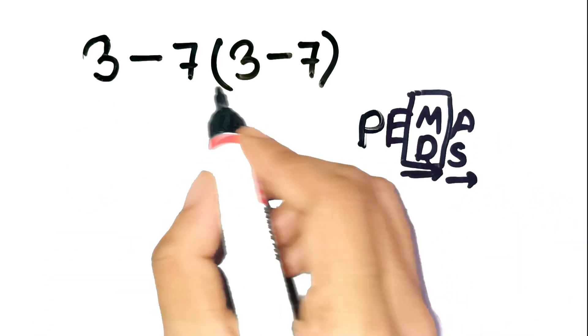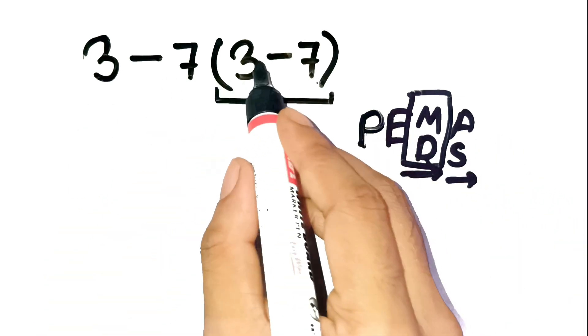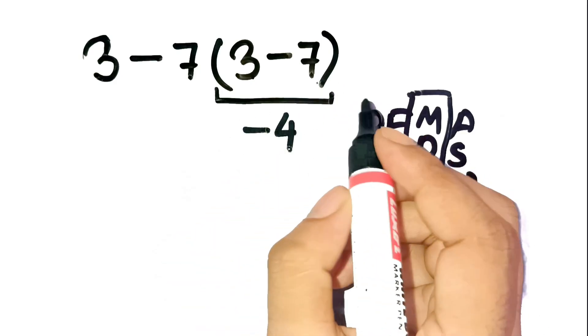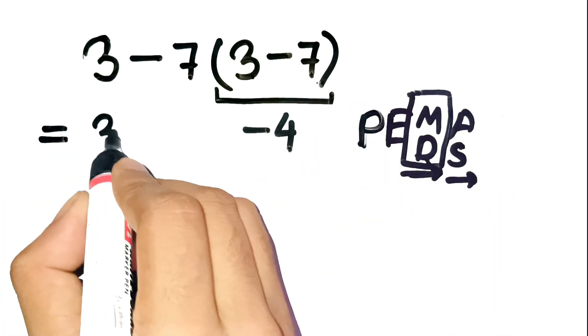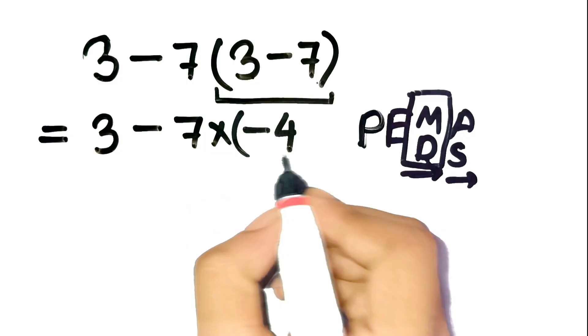Step 1, handle the parentheses. Inside the parentheses, we have 3 minus 7, which equals negative 4. So now the expression becomes 3 minus 7 times negative 4.